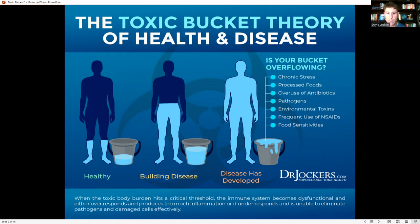If the immune system is under-responding, we're not able to eliminate pathogens like viruses, bacteria, and parasites effectively. Oxidative stress and inflammation can damage cells and create senescent cells and senescent mitochondria. Normally we're eliminating or repairing those damaged cells, but when our body gets overwhelmed with toxicity it shuts down the ability to heal and repair effectively. We end up with a whole bunch of damaged, dysfunctional cells and all our cellular processes become weaker and less resilient.